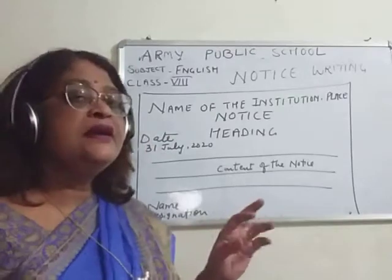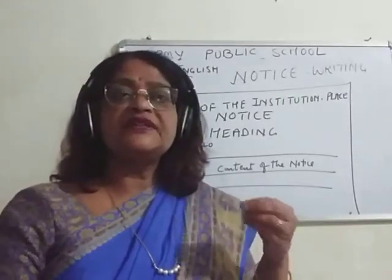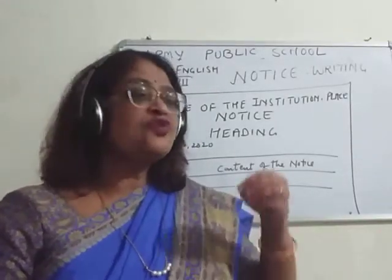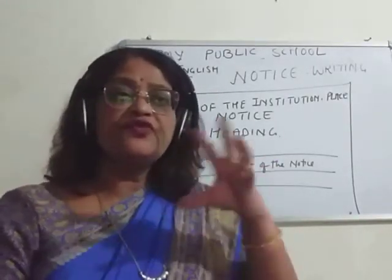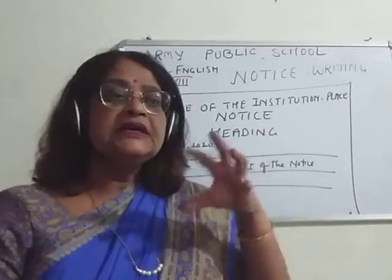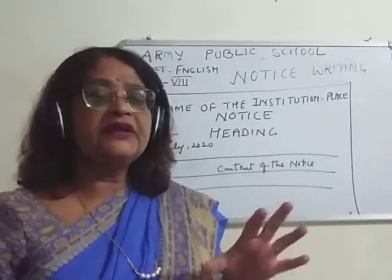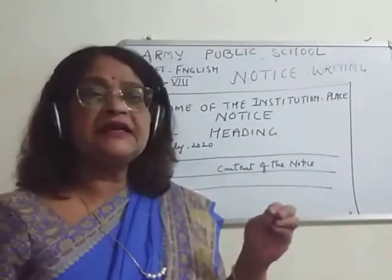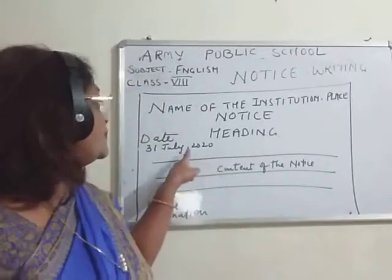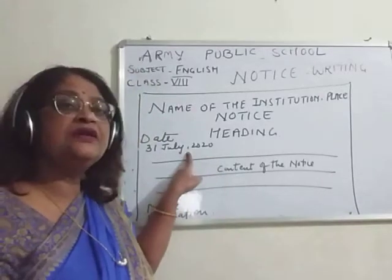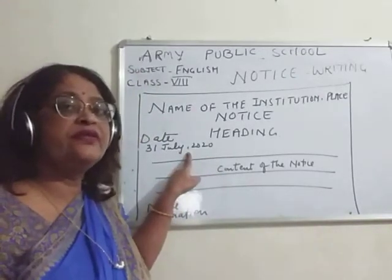In the date, if you have to write September, you cannot write 'Sept' — you have to write the full name of the month. And after writing the name of the month, you have to put a small comma, as you can see on the board.